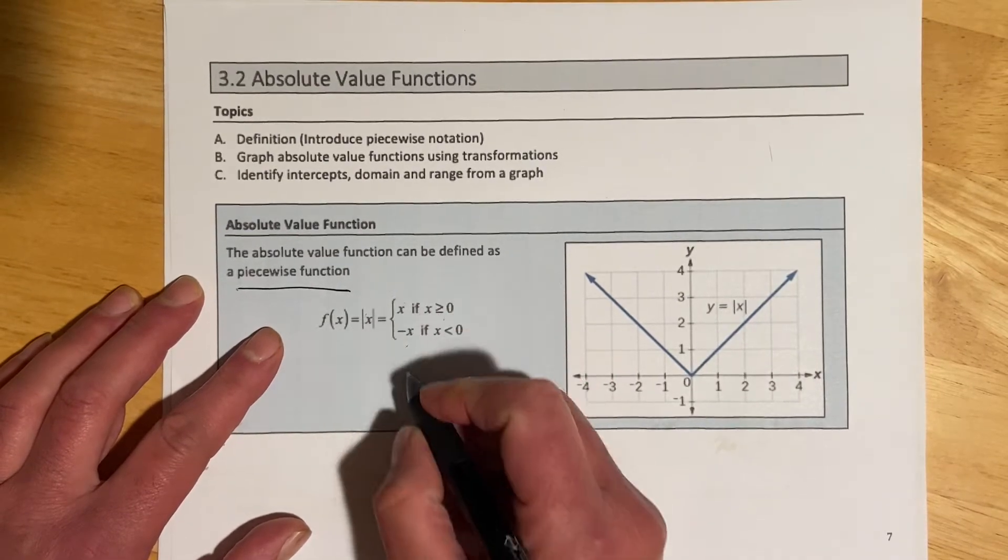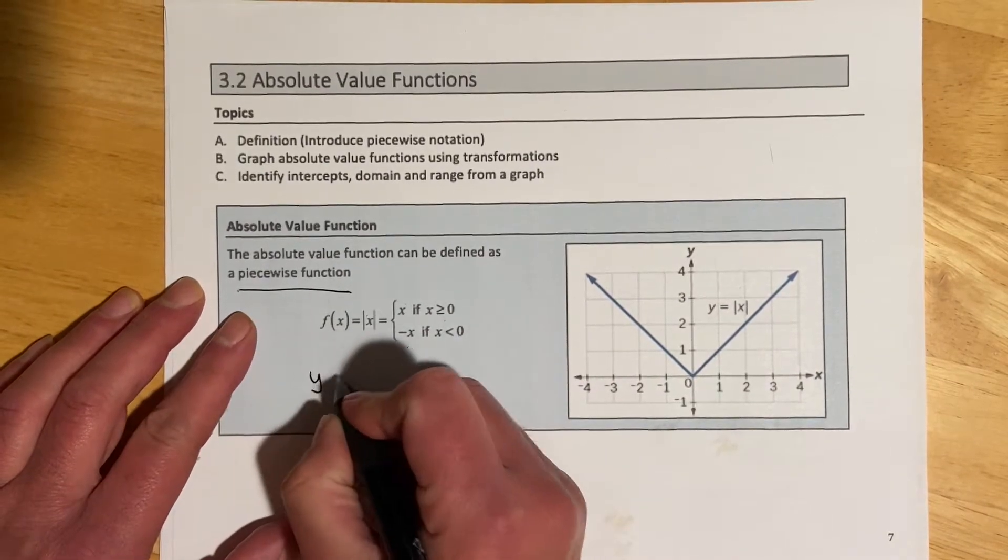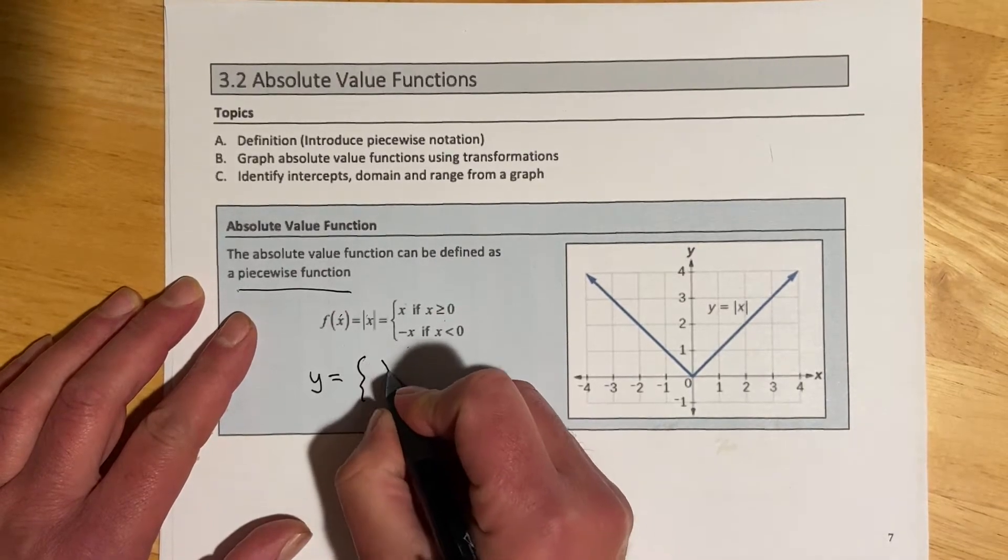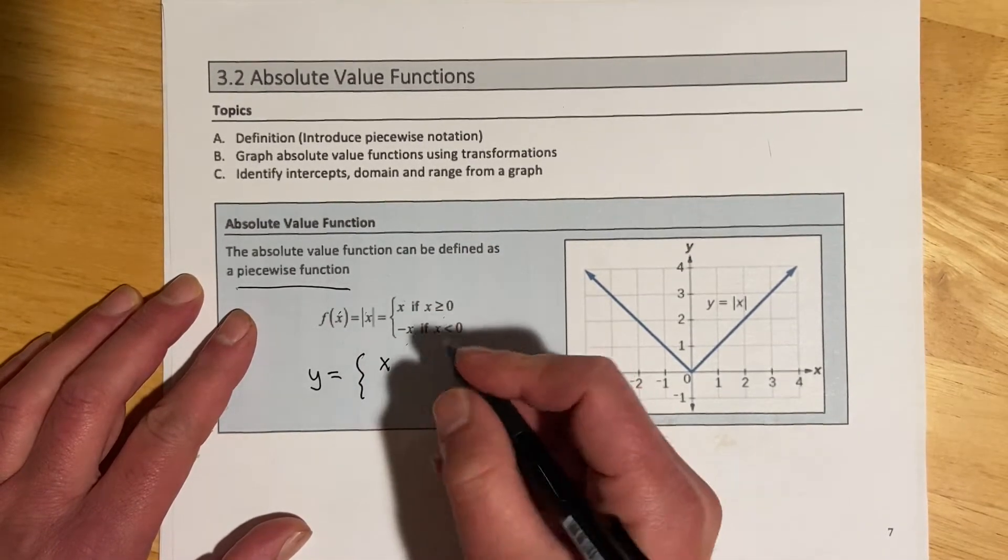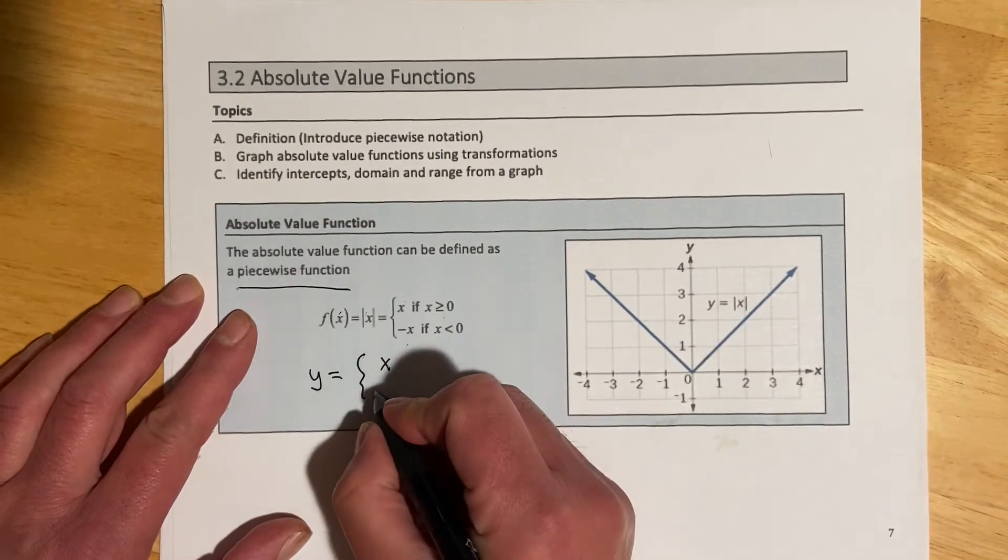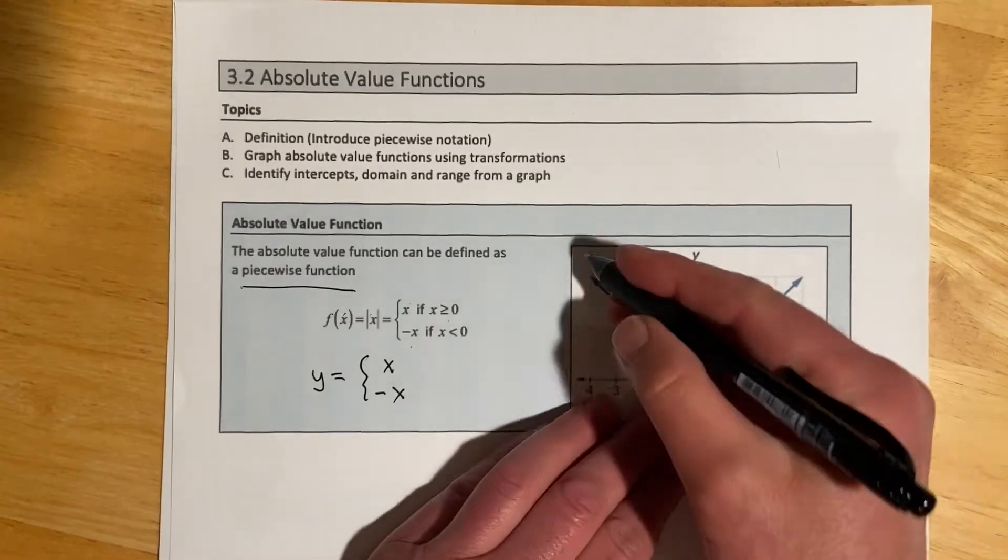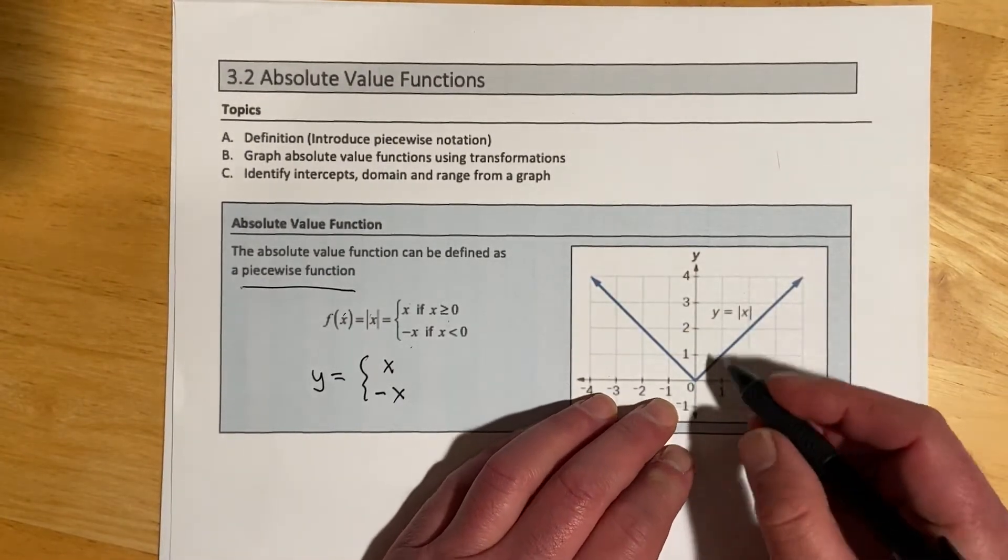What this is saying is that the outputs y, or f(x), are going to look like x when we're to the right of 0 and look like negative x when we're to the left of 0. That's basically what our absolute value looks like, a V shape.